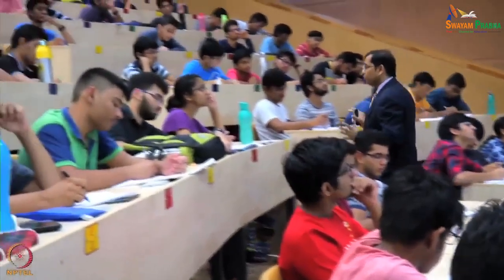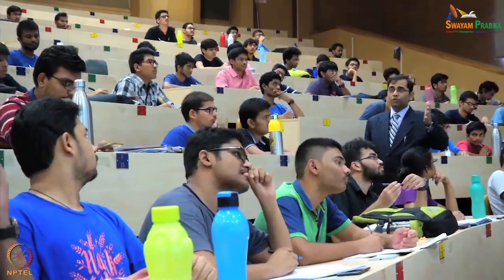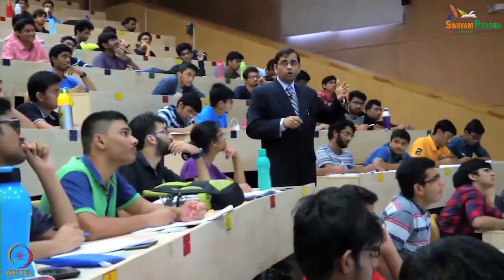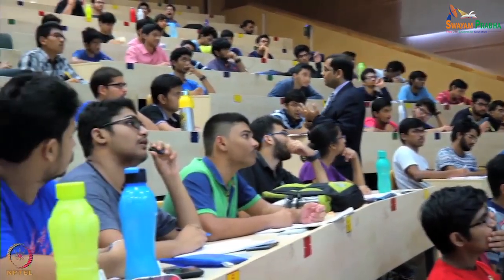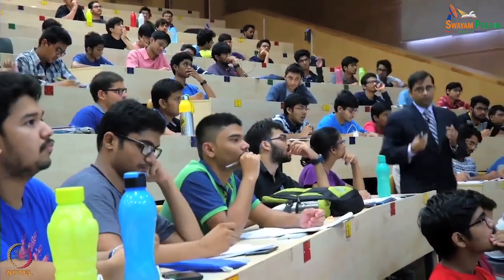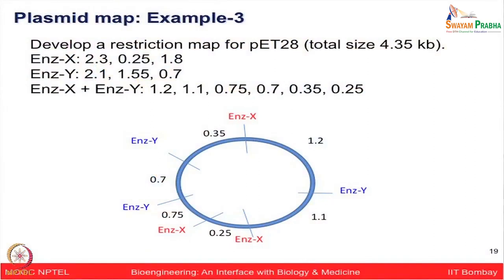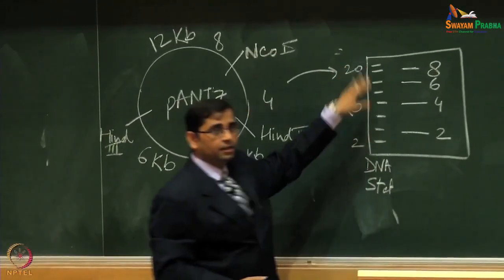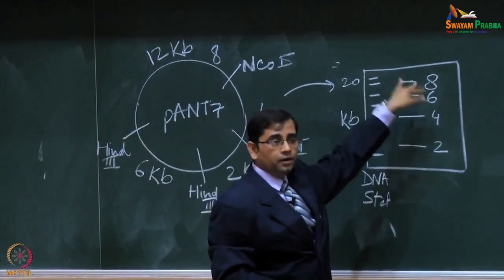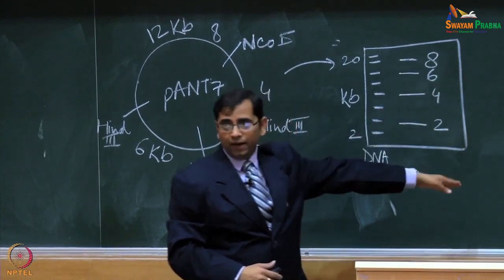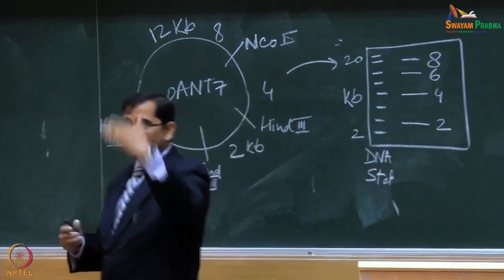For this exercise, do two things: first, draw the vector map showing where the restriction sites for enzyme X and enzyme Y are located; second, draw the agarose gel electrophoretic pattern showing separate lanes for enzyme X alone, enzyme Y alone, and enzyme X plus Y together, and indicate where each band will appear. Try multiple possibilities to find fragment placements that are consistent across all digestion conditions. Please work through this problem when you get back.